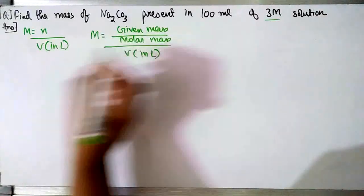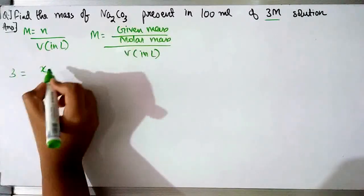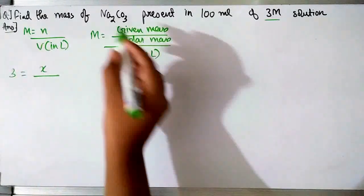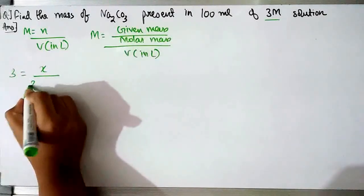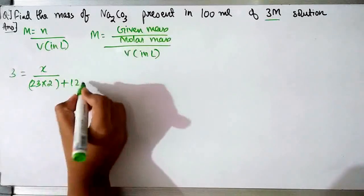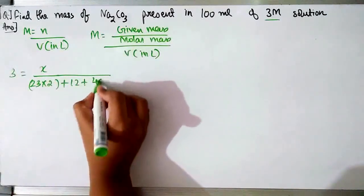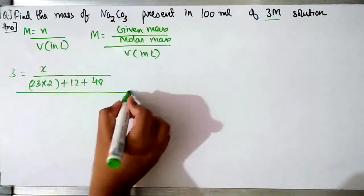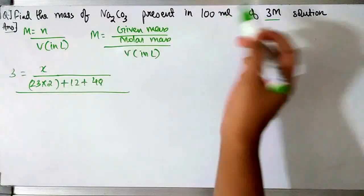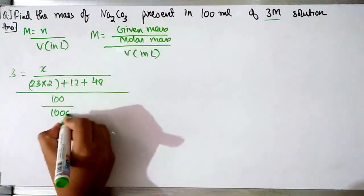So for that, 3 is the molarity. We have to find the mass, so in place of that we will write x. The molar mass of Na₂CO₃ will be: sodium is 23 × 2, plus carbon is 12, plus oxygen is 16 × 3, which is 48, upon the volume of solution in litres — 100ml, which is 100 by 1000 in litres.